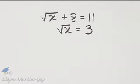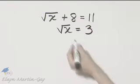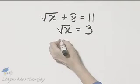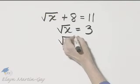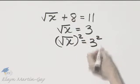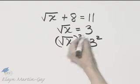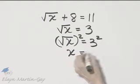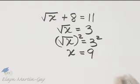Once you've isolated the radical, if possible, and here it is, then we will square both sides. So we'll square the left side and we'll square the right side. And remember the square root of x squared, that's x, is equal to 3 squared or 9.